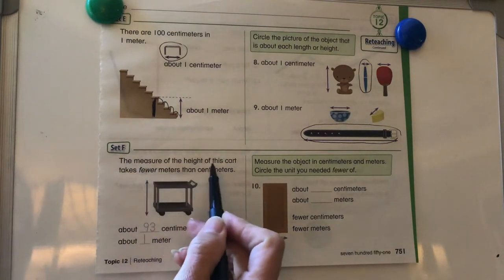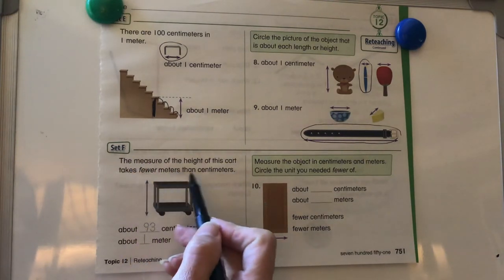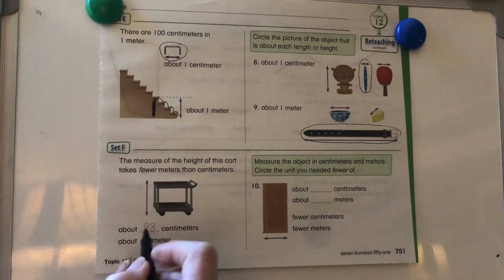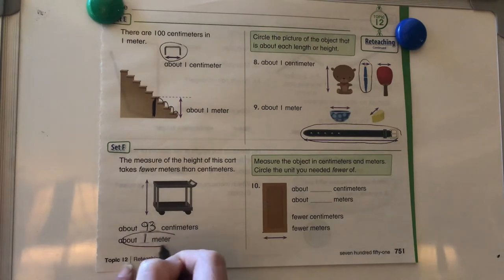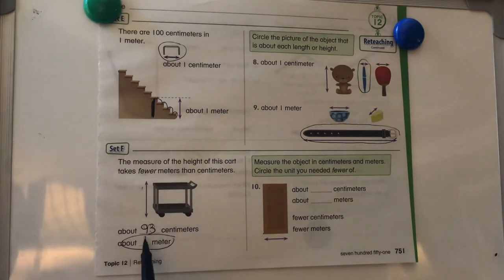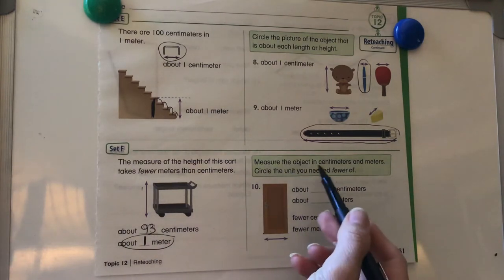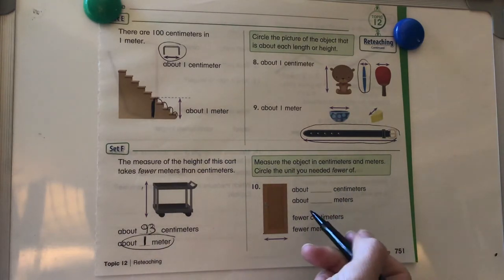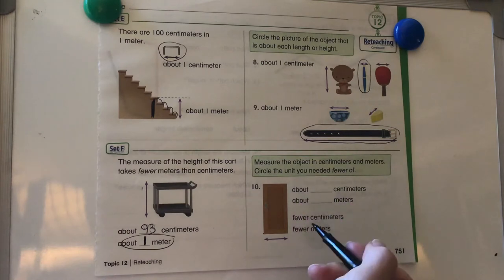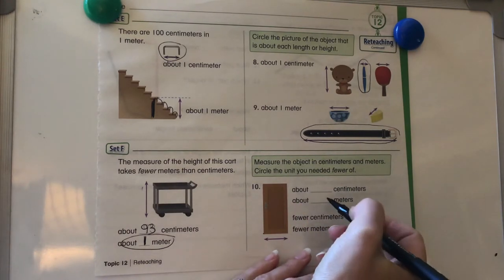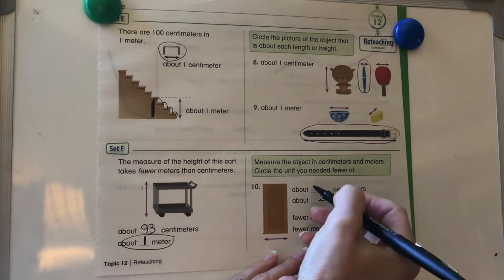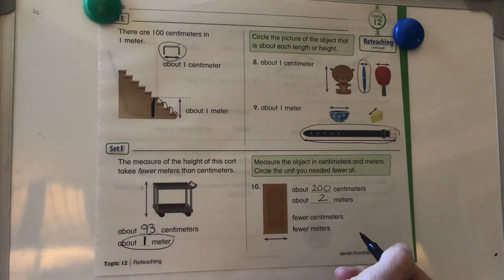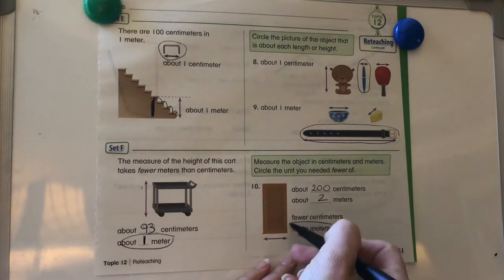Set F. The measure of the height of this cart takes fewer meters than centimeters. So it's about one meter or 93 centimeters. So that's going to be fewer meters is the number smaller. It's a bigger unit, so we need less of them. So measure the object in centimeters and meters. Circle the unit you needed fewer of. So the door is about two meters, which was about 200 centimeters. So we need fewer meters.